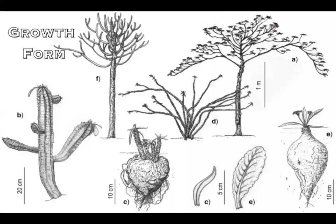The various growth forms of Euphorbiaceae include trees, herbs, succulents, shrubs, and twiners, which include plants that grow wrapped around some object of support.